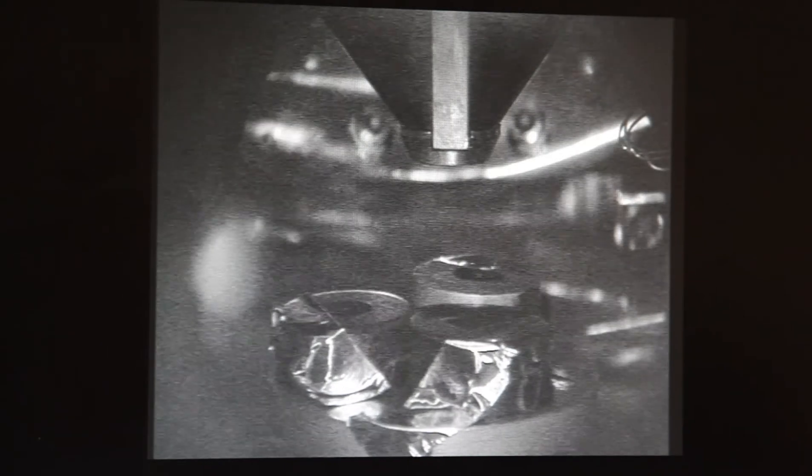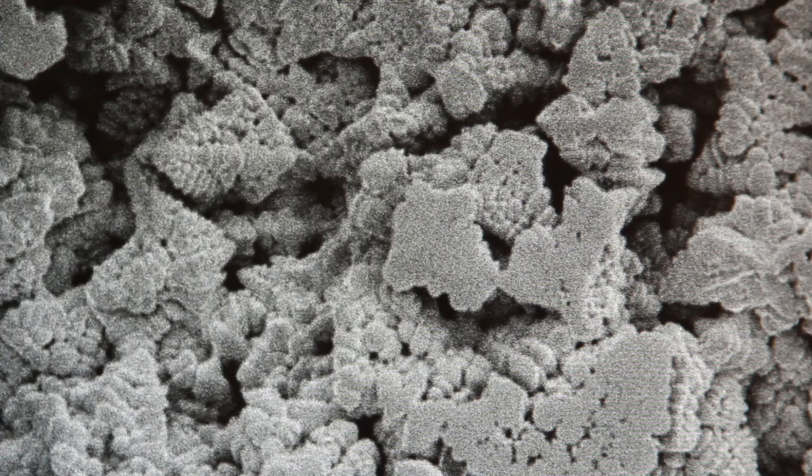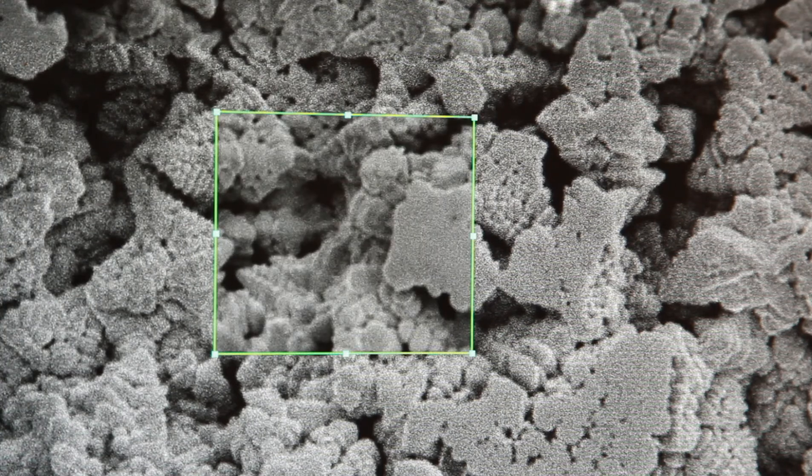A focused electron beam scans the sample surface to create an image, producing various signals that can be used to obtain information about topography and elemental composition.